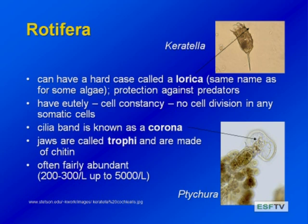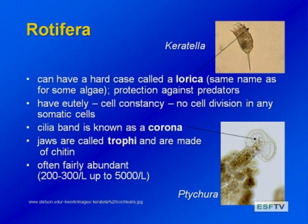After maturity, rotifers have a constant number of cells. When they're growing, they do not produce additional cells — they just grow in size. This is the same as nematodes, so they can be used for developmental biology research. They have this unique feeding apparatus, the corona, that can also help them move, and they have unique jaws made of chitin, just like the exoskeleton of a crustacean. In most freshwaters during the growing season, you will find several hundred per liter, and there can be thousands per liter if they're really blooming.